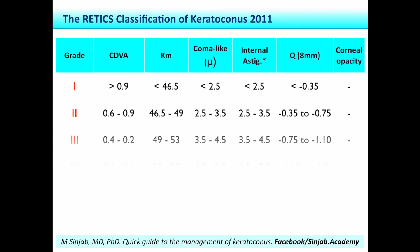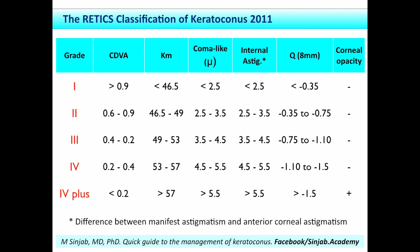The RETEX depends on best corrected visual acuity, corrected distance visual acuity, the average K reading, coma-like high-order aberrations, internal astigmatism, Q value, and the status of the cornea in terms of corneal transparency. The internal astigmatism is the difference between manifest astigmatism and anterior corneal astigmatism. This classification grades the case into grade 1, 2, 3, 4, and 4+. I will discuss this classification when covering the intracorneal ring segment implantation option in the coming videos on management modalities.